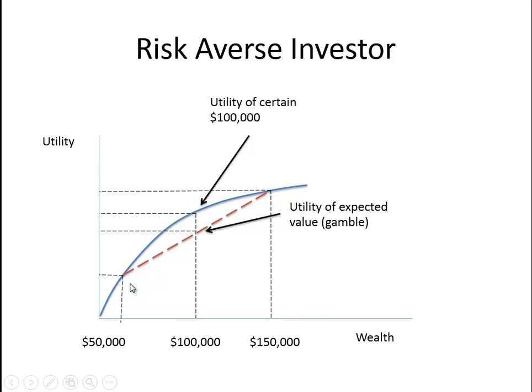Here I've drawn it and shown you the utility you receive when you get certain levels of wealth. I've also drawn a line here that shows you the utility of this expected value of the gamble. The 50% chance of $50,000, the 50% chance of $150,000 gives you a straight line. But where do these numbers come from?